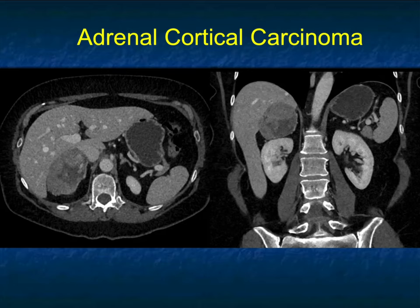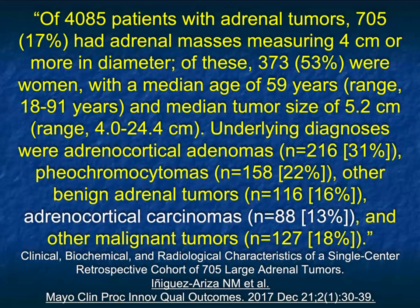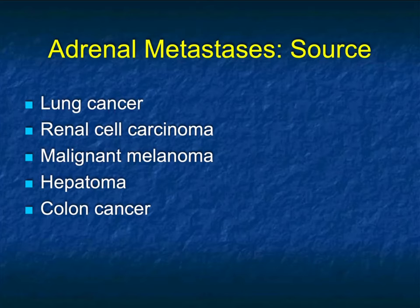The cases just shown really only have large size in common — some had neovascularity, some did not; some had necrosis, some did not. In a large series from the Mayo Clinic, adrenal cortical carcinomas were only 13% of large adrenal masses — and that's probably a high 13% because many ACC patients are referred to Mayo Clinic surgeons, which inflates their percentage.